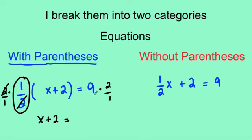And then on the right side, 9 times 2 gives me 18. Then I have an equation that has no fractions in them any longer. I've cleared them out, and I subtract 2. So x equals 16.